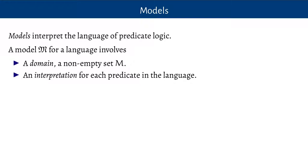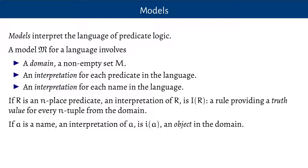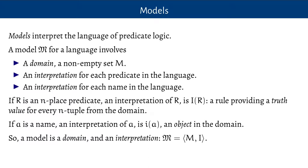For each predicate in the language we need to interpret it, and for each name in the language we need to interpret that. For a name, we need an object in the domain for the name to name. For a predicate, we need a rule which provides a truth value for every appropriate number of things from the domain. For a one-place predicate we need a truth value for every single object in the domain; for a two-place predicate we need a truth value for every pair of objects — a two-tuple. For a three-place predicate we'd need a truth value for every triple. A name is interpreted by selecting an object for it to name. Bundle that together and you have a model: a domain and an interpretation.